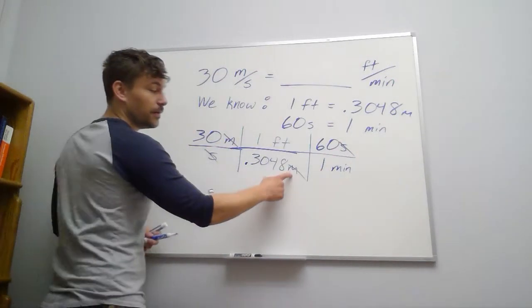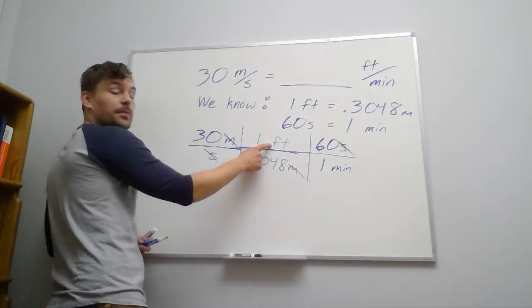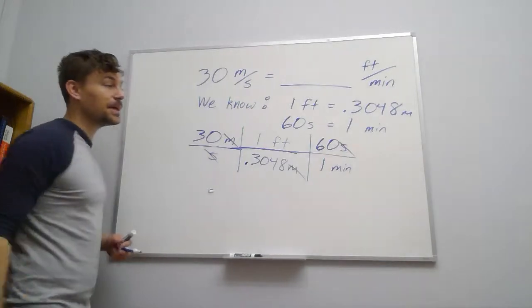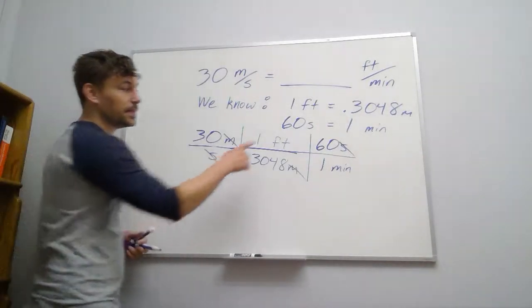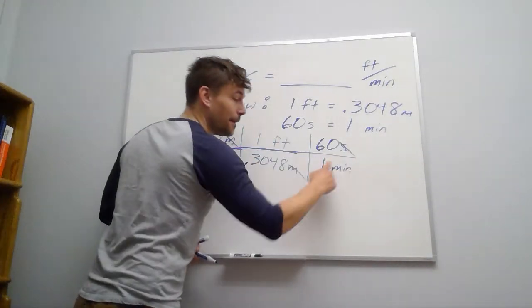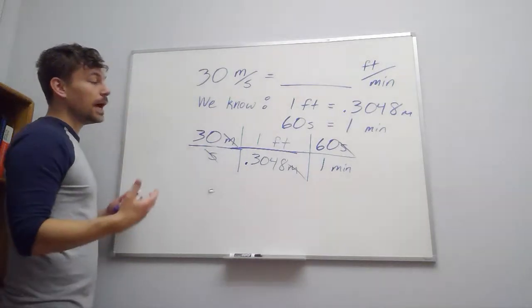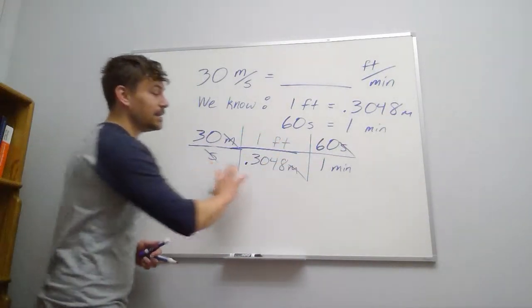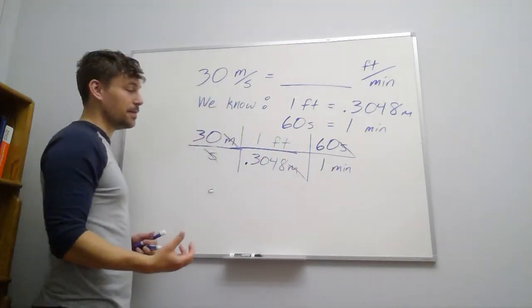So first we got rid of our units of meters, picked up feet. Then we got rid of our units of seconds, picked up minutes. So the only thing left should be feet on the top, minutes on the bottom. And then anything on the top, we're going to multiply through. Anything on the bottom, we're going to divide by those.